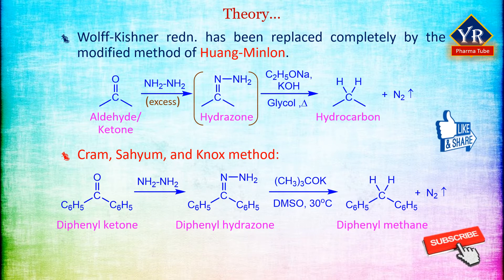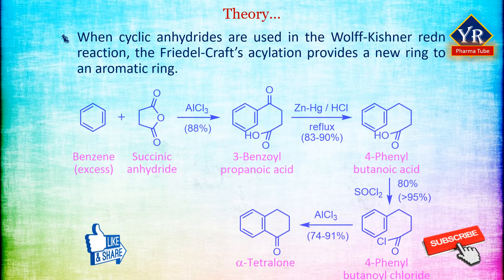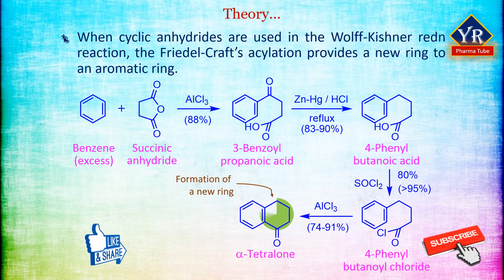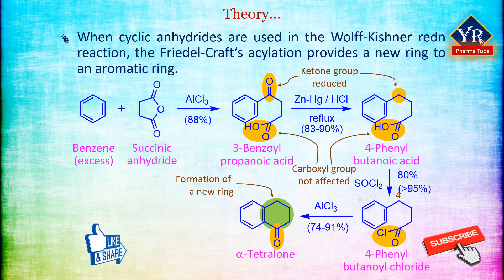Unlike Clemmensen reduction, the Wolf-Kishner reduction does not fail with acid-sensitive or high molecular weight substances. When cyclic anhydrides are used in the reaction, Friedel-Crafts acylation provides a new ring to an aromatic compound, and the same results can be achieved using the Wolf-Kishner reduction. Note that only the ketone is reduced and the carboxylic acid is unaffected, which is quite similar to that of Clemmensen reduction reaction.